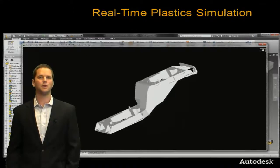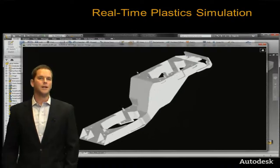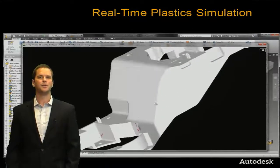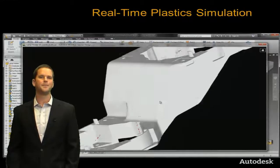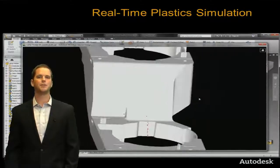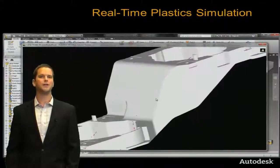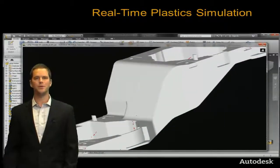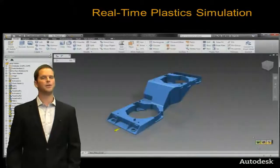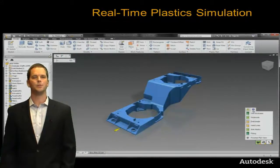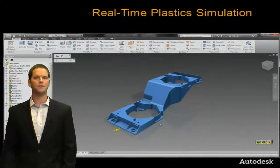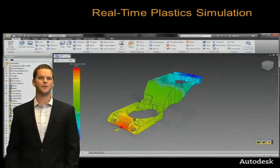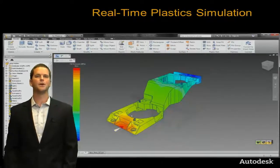We can also find out where sink marks are. The plot itself is nice, but to really understand how bad they are, here's a finished part preview. This gives us a much better idea of the location and relative visibility of the sink marks within a part. We can even bring these into Showcase with the other Moldflow products and show that very visually — very important when aesthetics are critical.